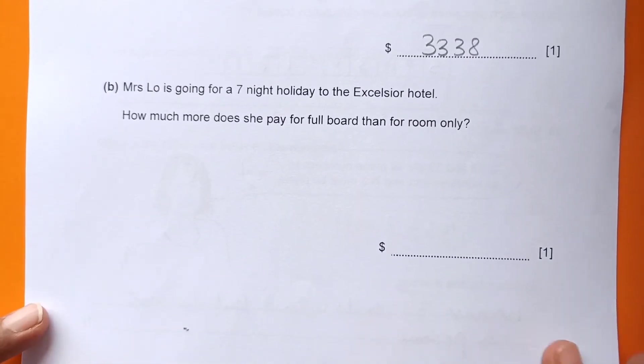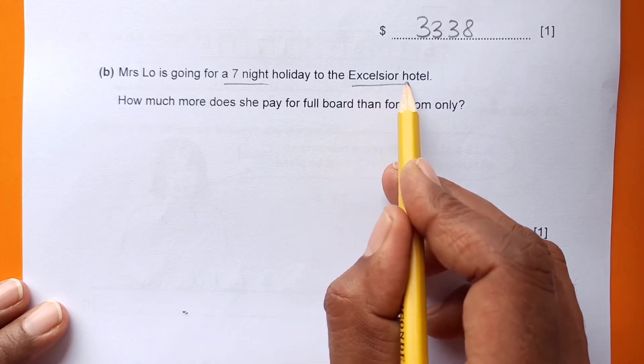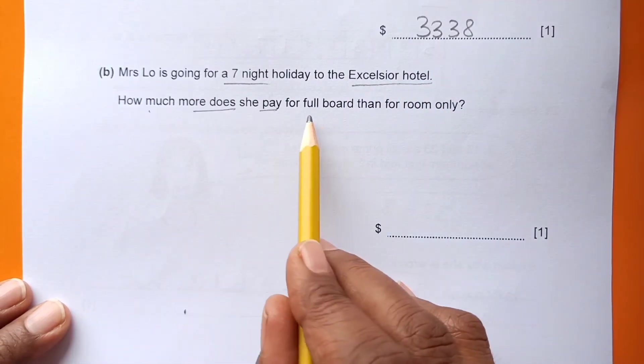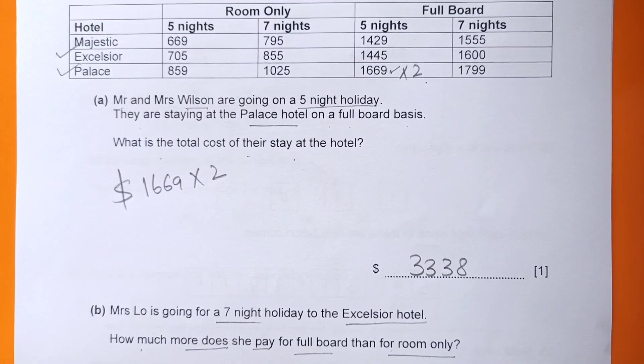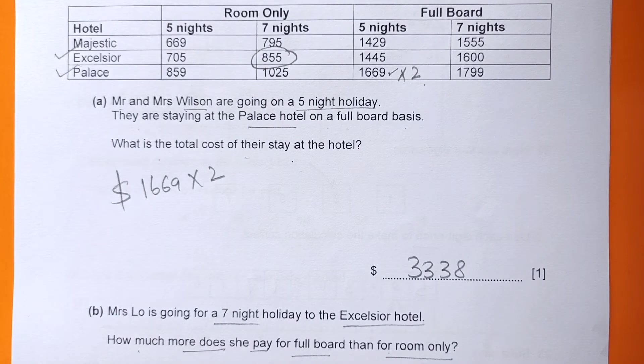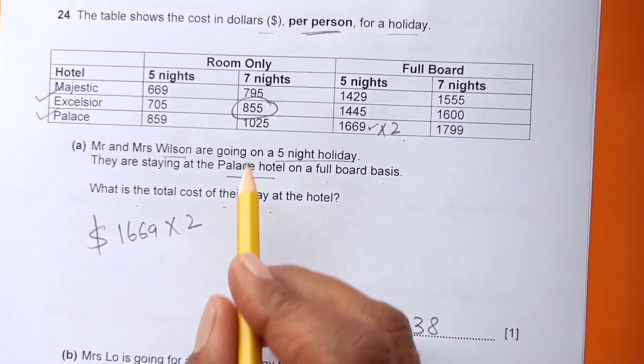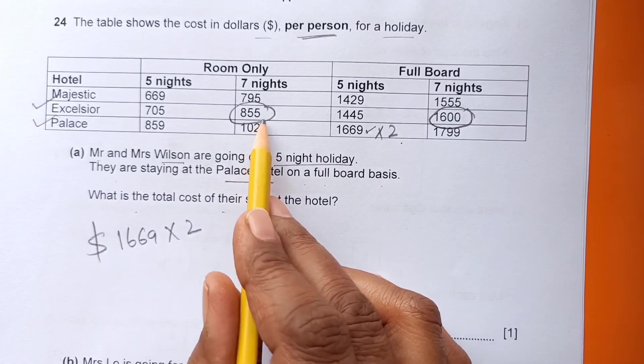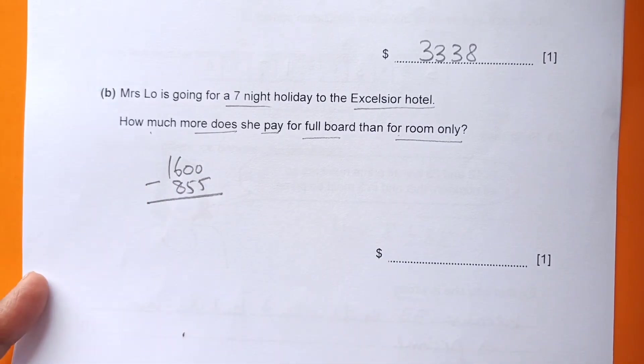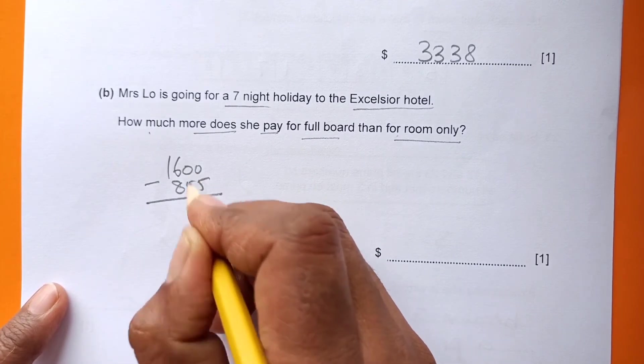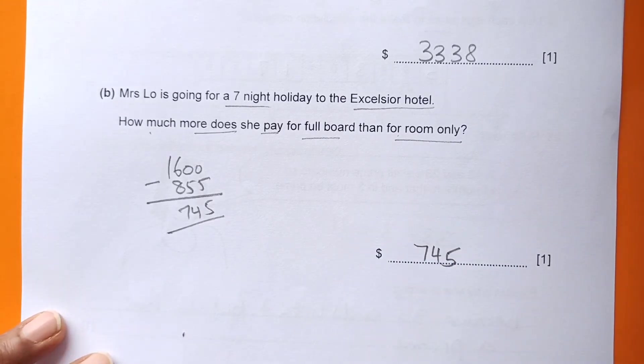Part B: Mrs. Loh is going for a seven-night holiday at Excelsior Hotel. How much more does she pay for full board than for room only? She is there for seven nights. This is room only cost and this is full board. We're just going to subtract: 1600 minus 855, which comes out to 745. So she has to pay $745 more.